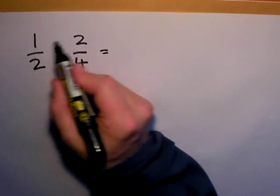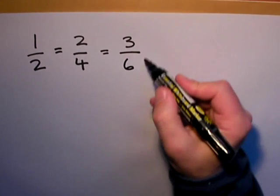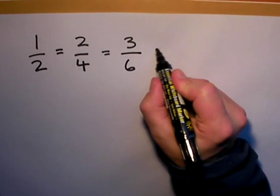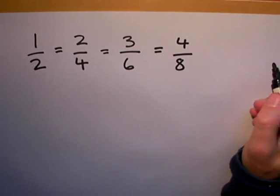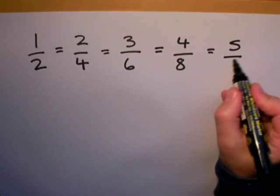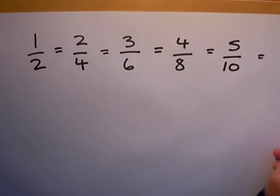I'm going one-two-three, two-four-six, and three out of six is also equal to a half. Now I can carry this pattern on so that four out of eight is equal to a half, or one-two-three-four-five, two-four-six-eight-ten. This goes on and on for quite a long time.